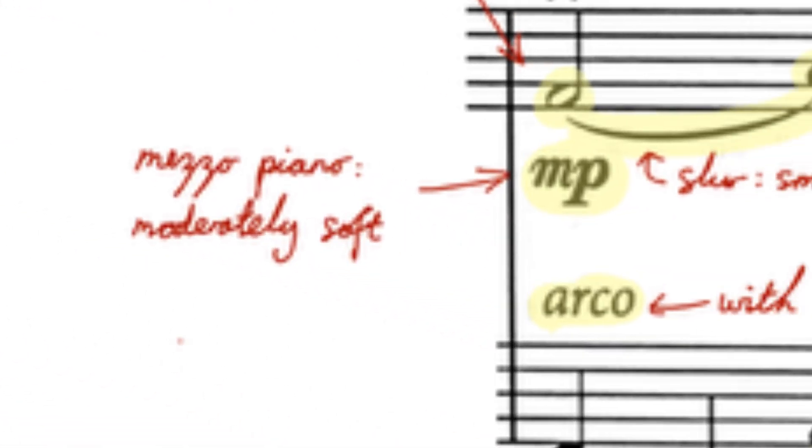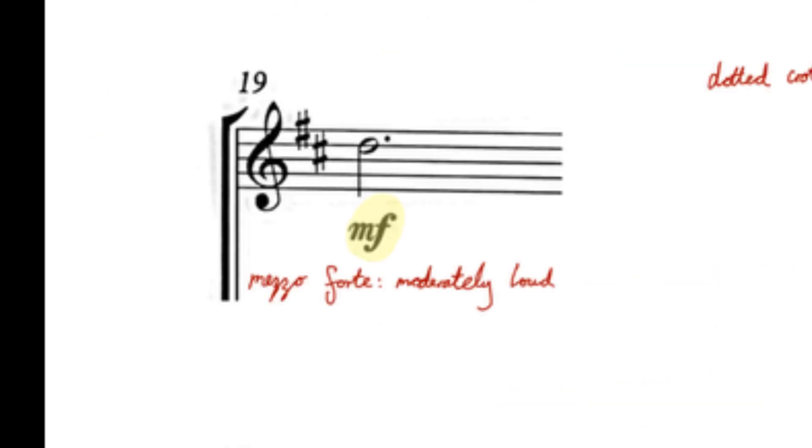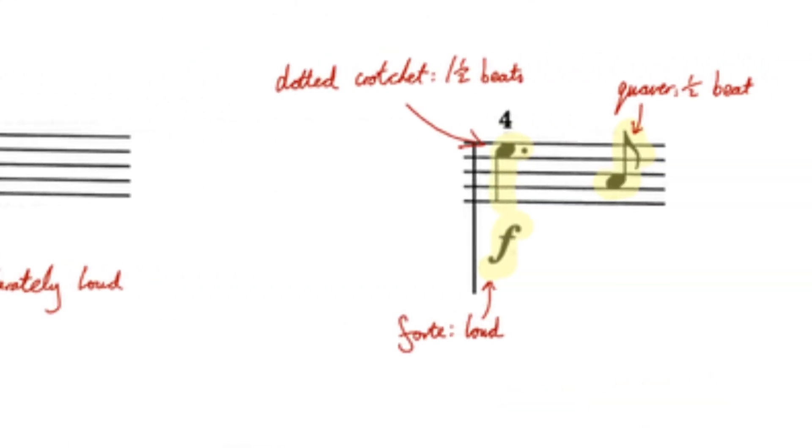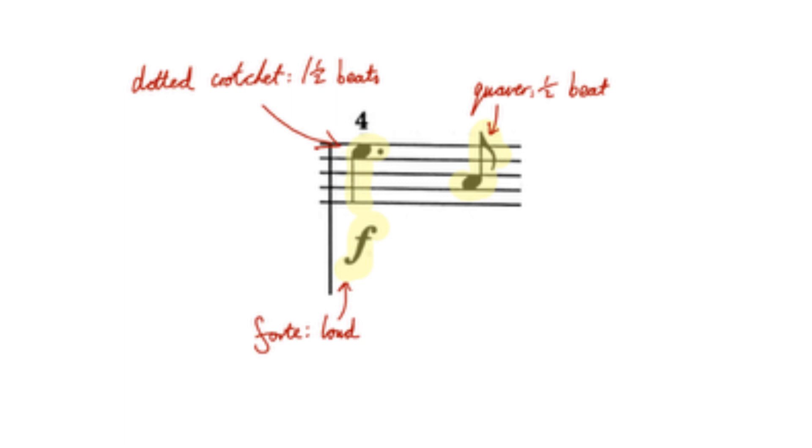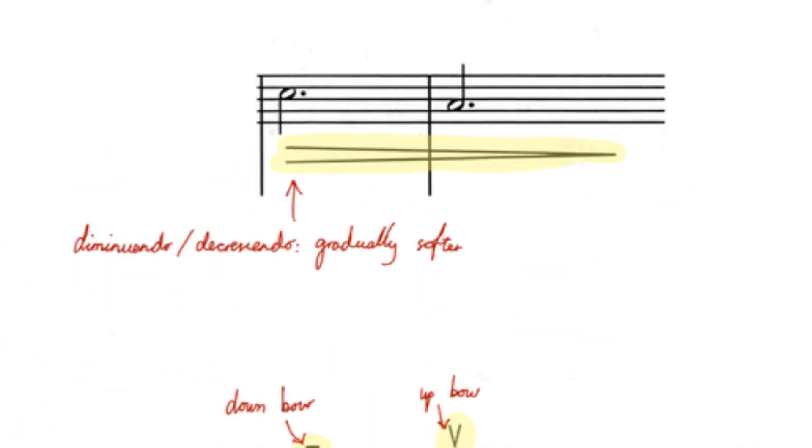MP for mezzo piano means moderately soft, MF for mezzo forte means moderately loud, F for forte means loud. There are also dynamics in the form of hairpins. This is a crescendo, which means to become gradually louder, and this is a diminuendo, or decrescendo, which means to become gradually softer.